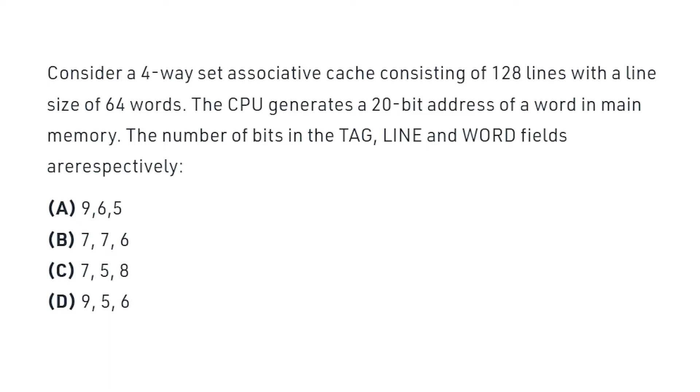You can notice a small mistake in the question. It's asking for the number of bits in tag, line and word fields. Rather they must ask for set field. In k-way set associative, physical address is split into tag, set and word fields. We don't have any line field. So that was a small correction.